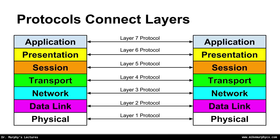The layer 1 protocol would define the electrical communication, radio communication, or optical communication patterns and techniques that would be used for physically getting bits from one place to another. Above that, however, all protocol implementations tend to be in software. In practice, we typically do not use layers 5 and 6, or the session and presentation layers.